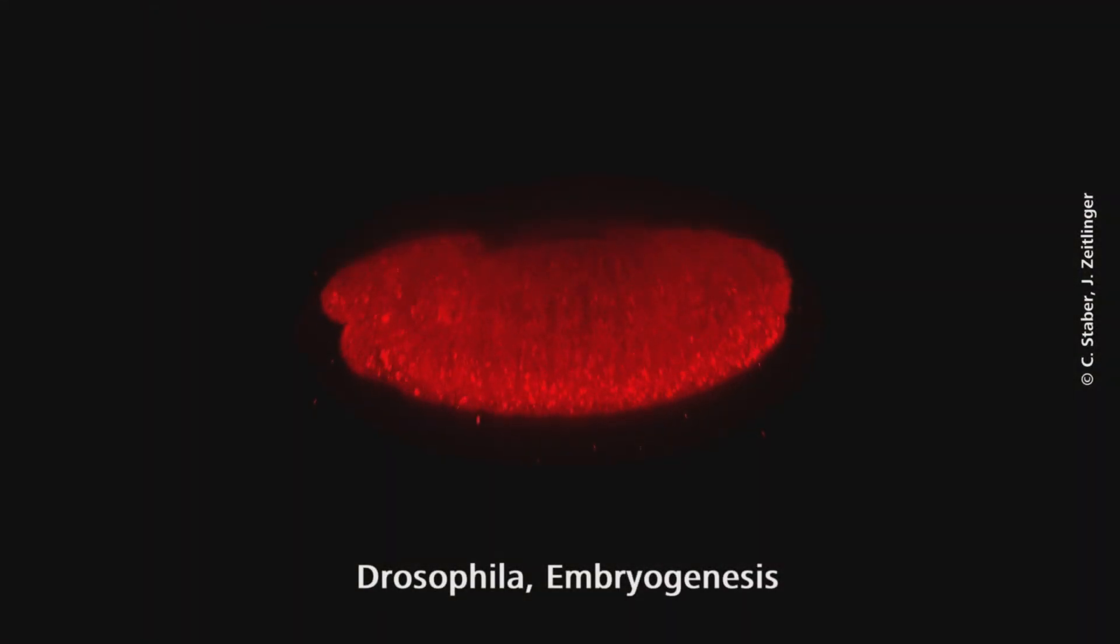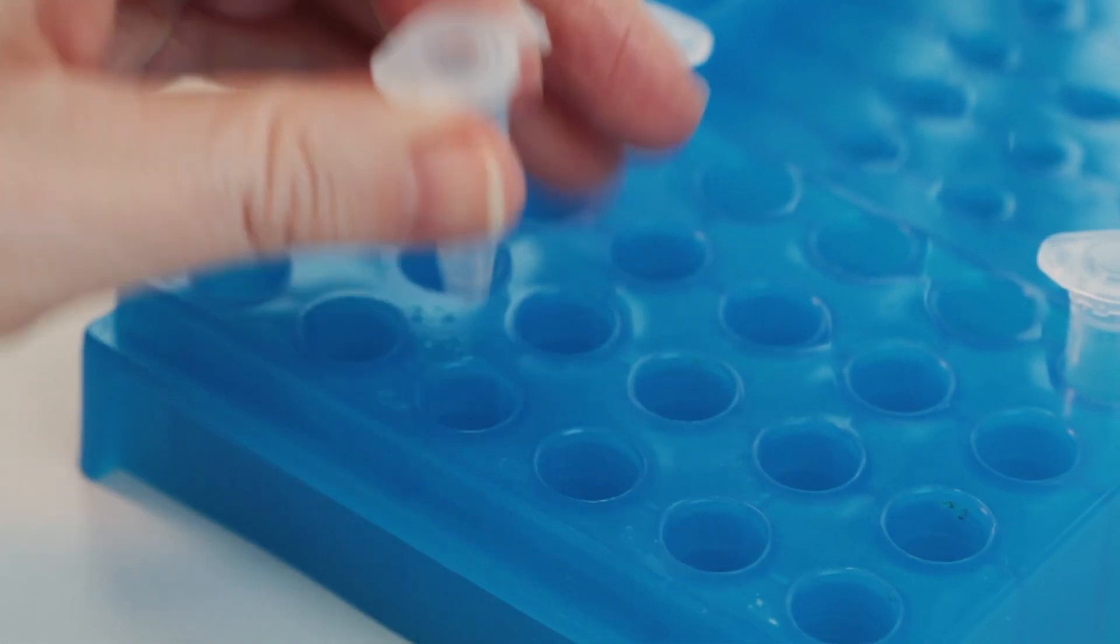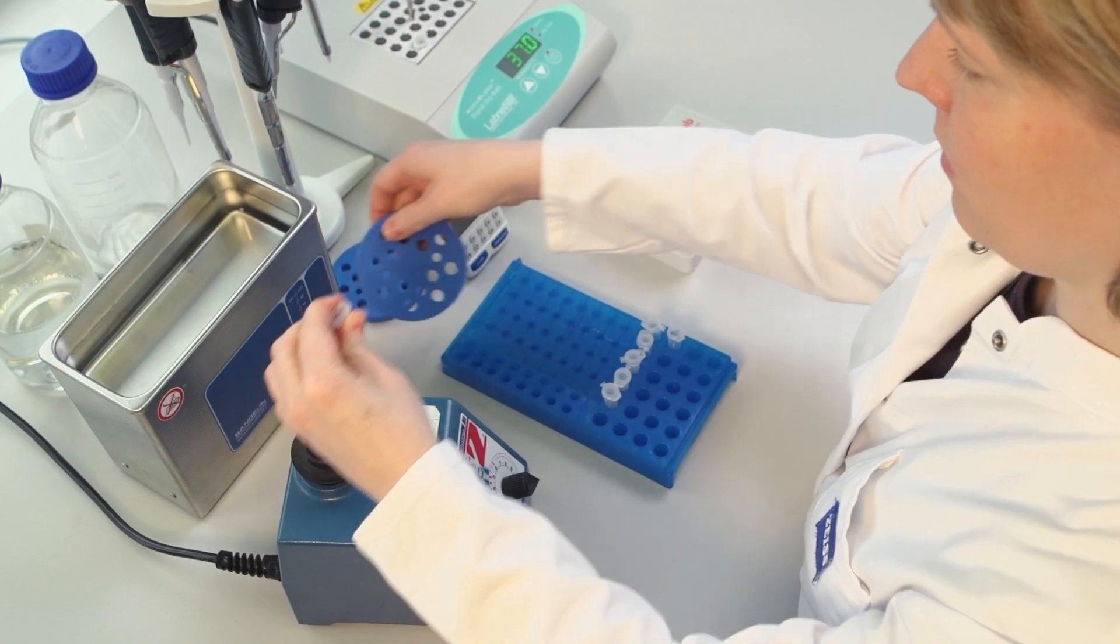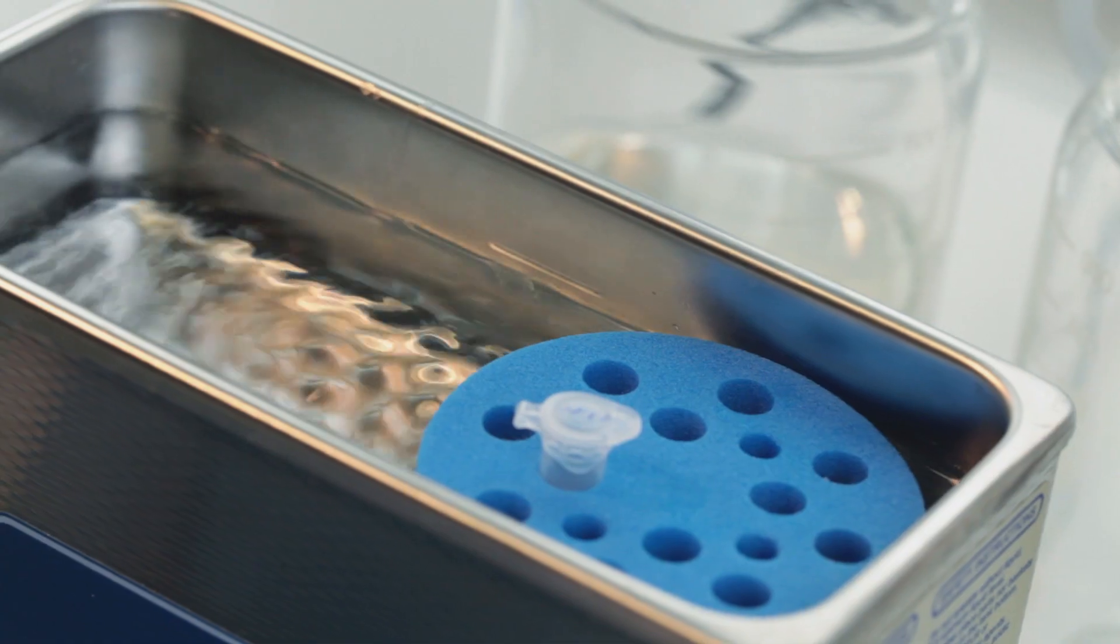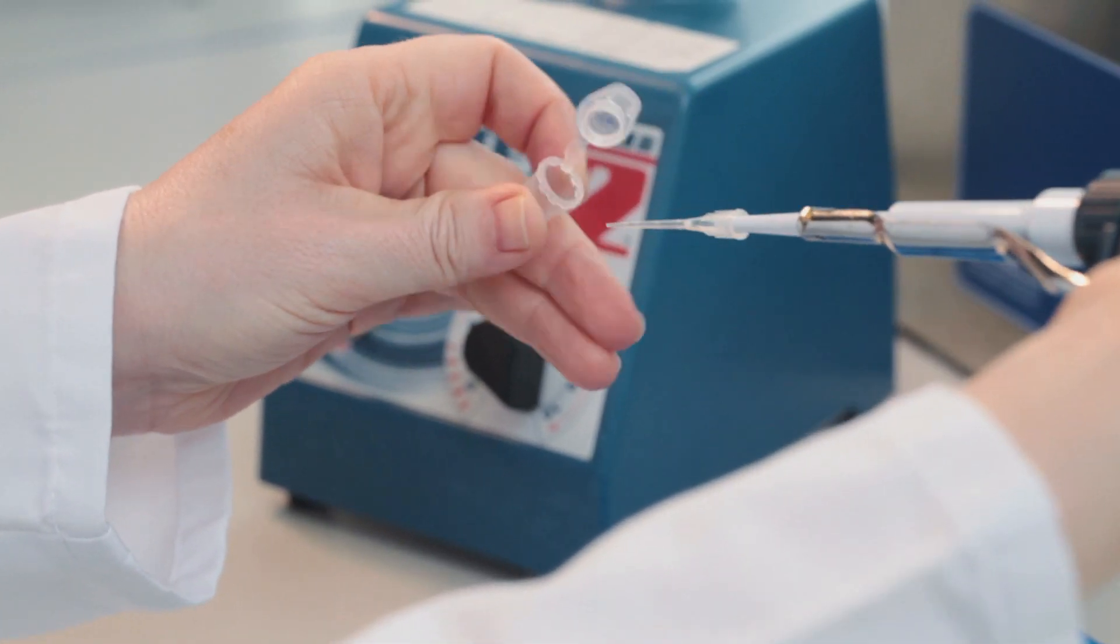Fluorescent beads will serve as fiducials for later multi-view alignment. Simply mix them with the medium by repeatedly vortexing and sonicating. Then add them to the agarose and vortex again.